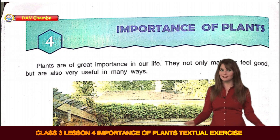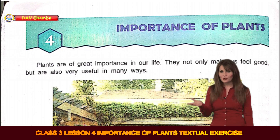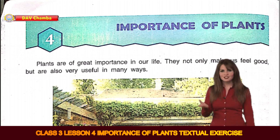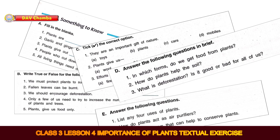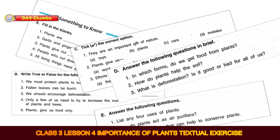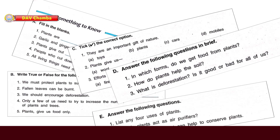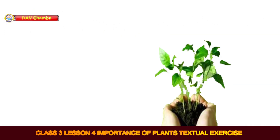Hello Students. Today we are going to discuss the Textual Exercise of Chapter 4, Importance of Plants. There are five parts in this chapter: A, B, C, D and E. Let's start with Part A — Fill in the blanks.